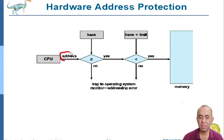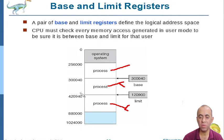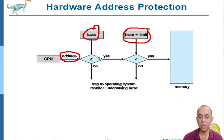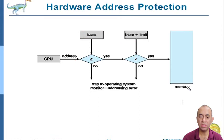Every address that program P2 generates is checked: that address must be greater than or equal to the base address and less than the base plus limit value. So the operating system, using the CPU, is checking every address — it must be greater than or equal to the base address and less than base plus limit. This is called hardware address protection. The base and base-plus-limit values are used to protect processes from accessing each other's memory.